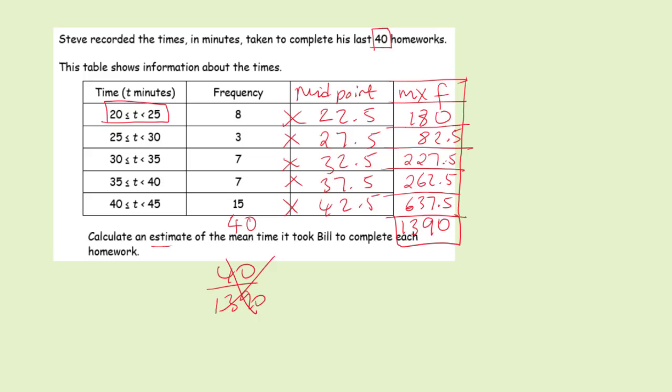Always multiply the midpoint times by frequency which is 1390 divided by 40. Always divide the bigger one by the smaller number - that helps you remember it. That will give you 34.7. The mean time it takes him is 34.7 minutes, and that's the unit given in the question.